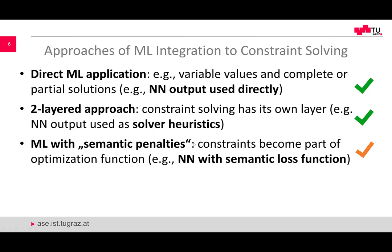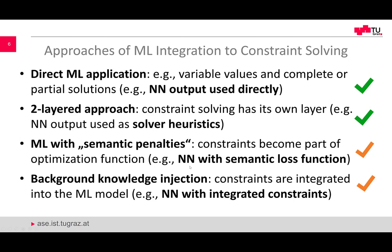We also have the aspect of semantic penalties, which is highly relevant. We can further improve machine learning quality if we are able to include constraints from the CSP definition directly into machine learning — for example, to integrate constraints as additional components in an optimization function of a machine learning algorithm. This works quite well in the context of neural networks or matrix factorization. This is one way of integrating constraints with machine learning to assure improved prediction quality.